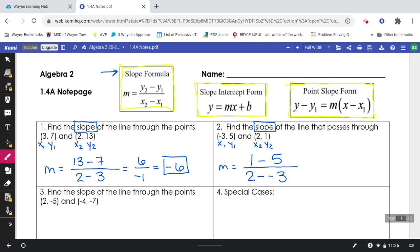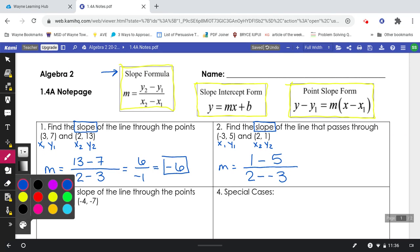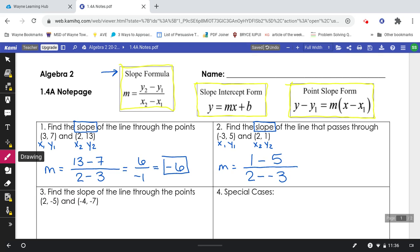For this one, we have 1 minus 5 and 2 minus negative 3. If you remember, when you have a minus negative, two negatives like that, it actually ends up giving you a positive number so you would double plus it like that. You could simplify moving forward. 1 minus 5 is negative 4, and 2 plus 3 gets you 5.